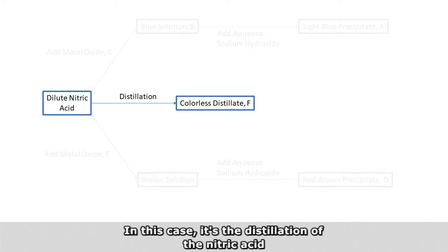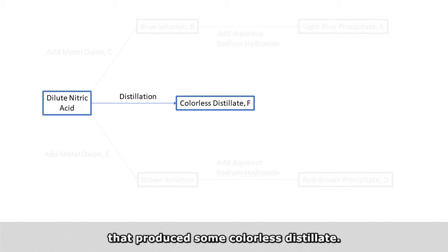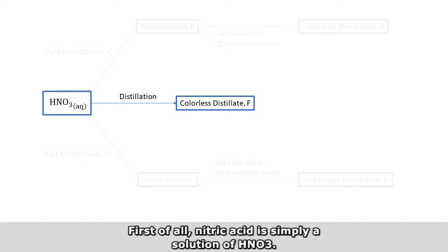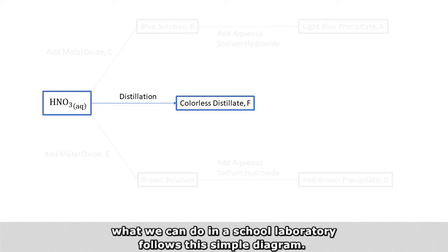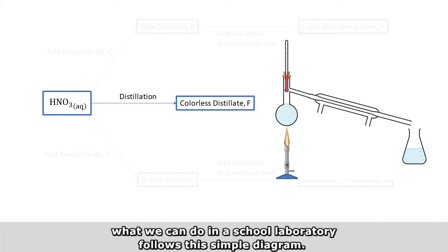In this case, it is the distillation of the nitric acid that produced some colorless distillate. So first of all, nitric acid is simply a solution of HNO3. If we have to distillate nitric acid, what we can do in a school laboratory follows this simple diagram.